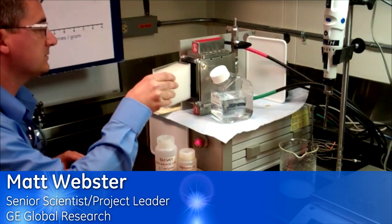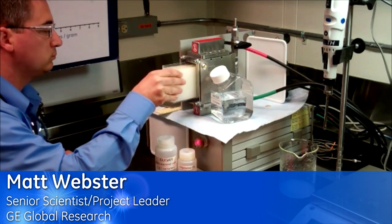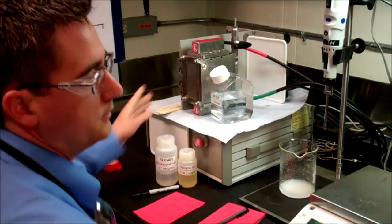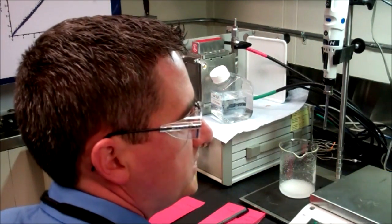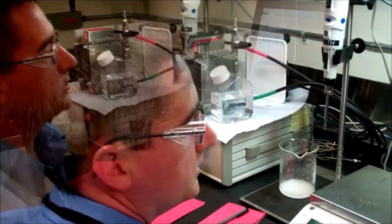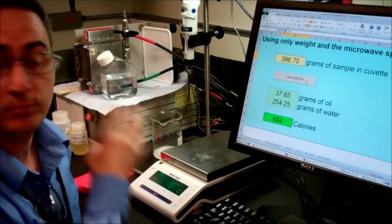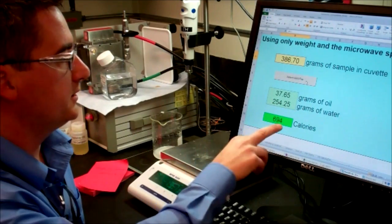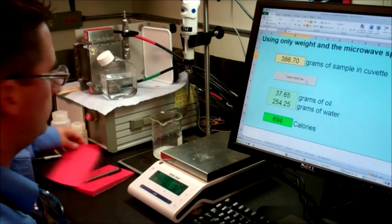And we put this in our device, and we take a measurement. So with that weight and the information that we just scanned, it's estimating 37 grams of oil and 254 grams of water and 694 calories.